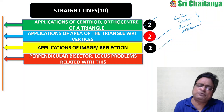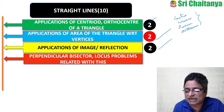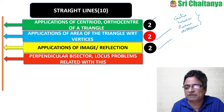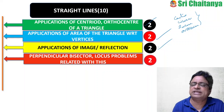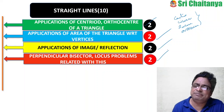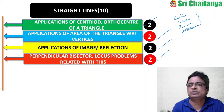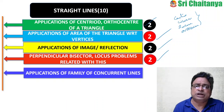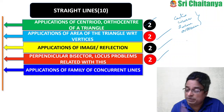Fourth: perpendicular bisector and locus problems — finding the perpendicular bisector of a line joining two points, and the locus of midpoints of perpendiculars from a point to lines joining two other points — 2 questions were asked among the 10 straight lines questions in JEE Main 2020.